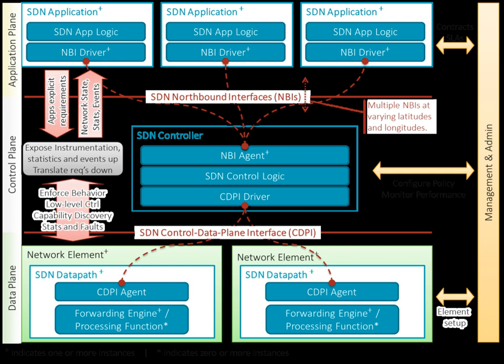SDN was commonly associated with the OpenFlow protocol for remote communication with network plane elements to determine the path of network packets across network switches since its emergence in 2011. However, since 2012, OpenFlow is no longer an exclusive solution for many companies; they added proprietary techniques, including Cisco Systems' Open Network Environment and Nisira's network virtualization platform.